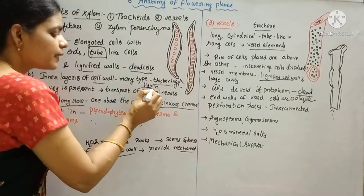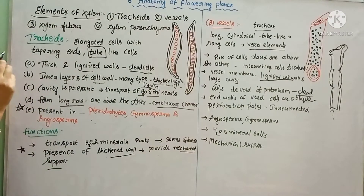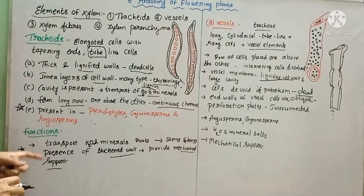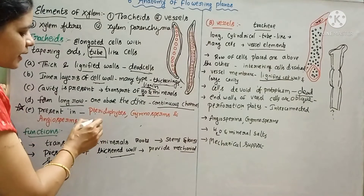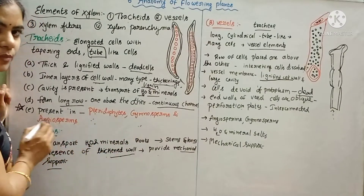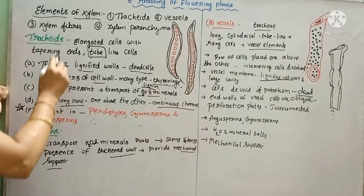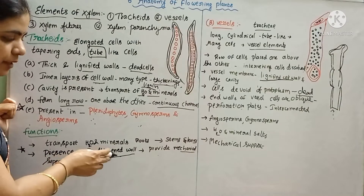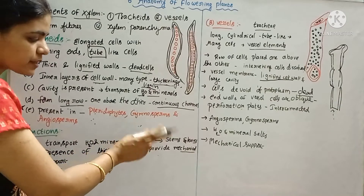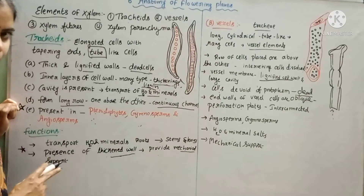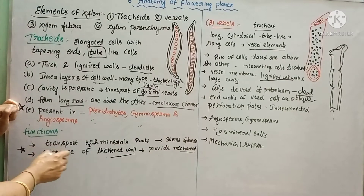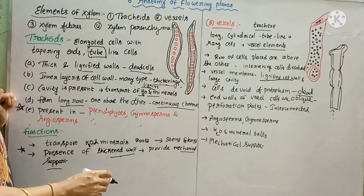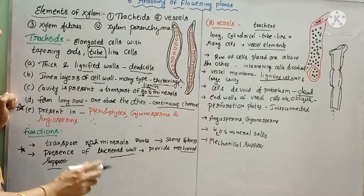The cell wall has thickness, and tracheids provide mechanical support for the plant.